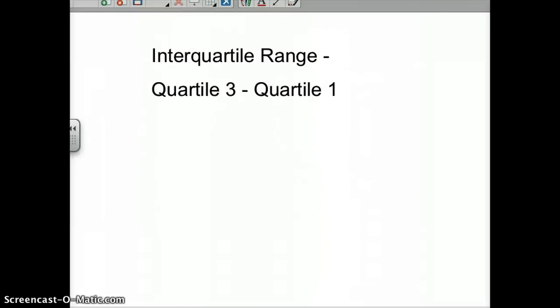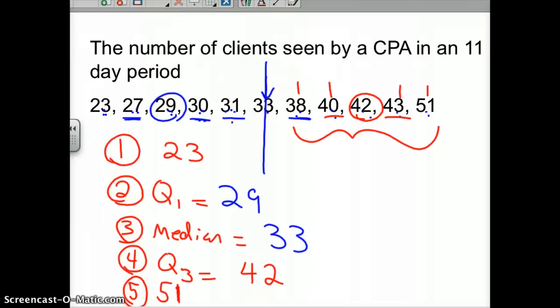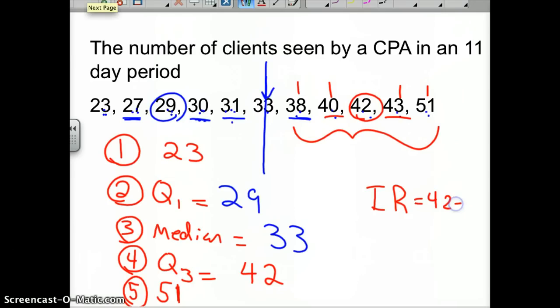That's exploratory data for the most part—the five-number summary, box plots, and interquartile range. I boxed out interquartile range, but it is quartile 3 minus quartile 1, which, if you just look at the data, it's 42 minus 29. IQR, interquartile range, 42 minus 29 is 13. You have 13 clients in terms of clients in an 11-day period.